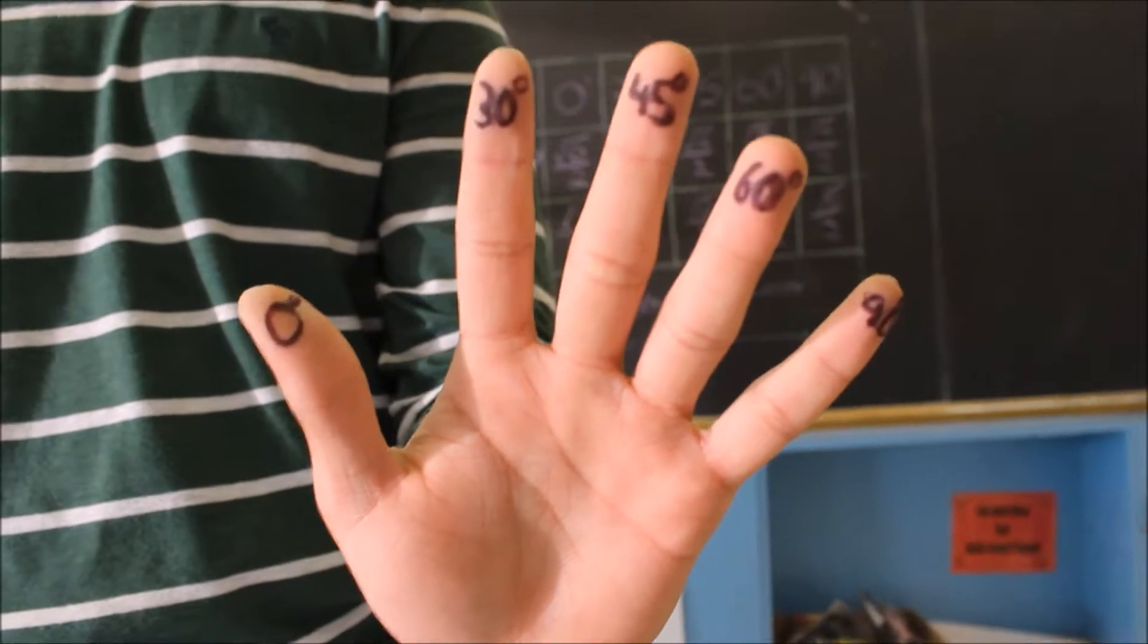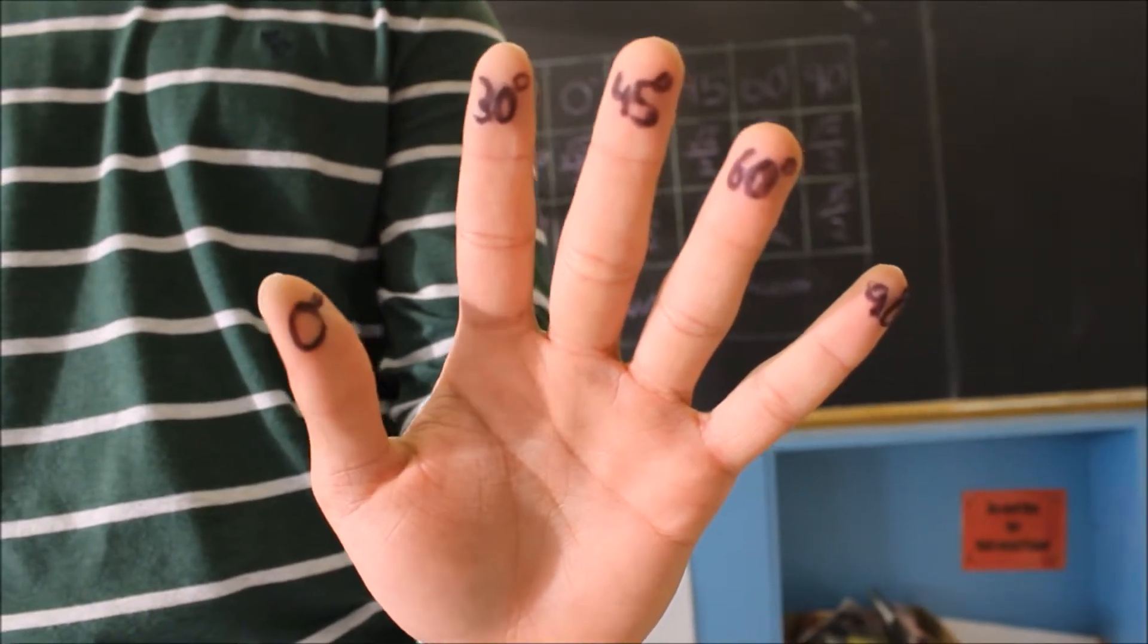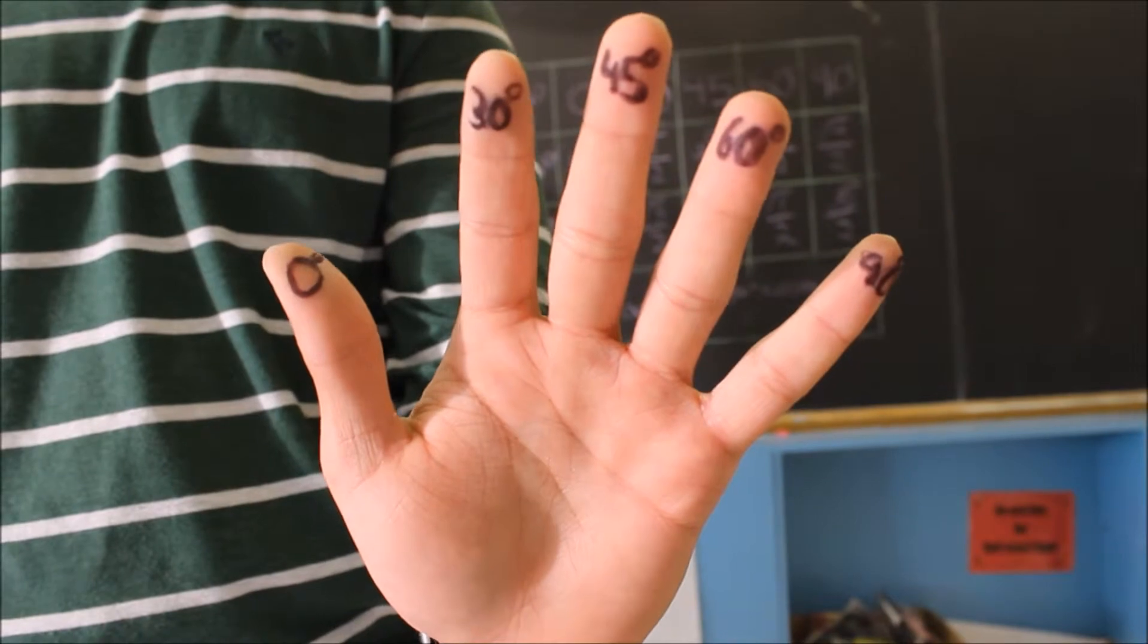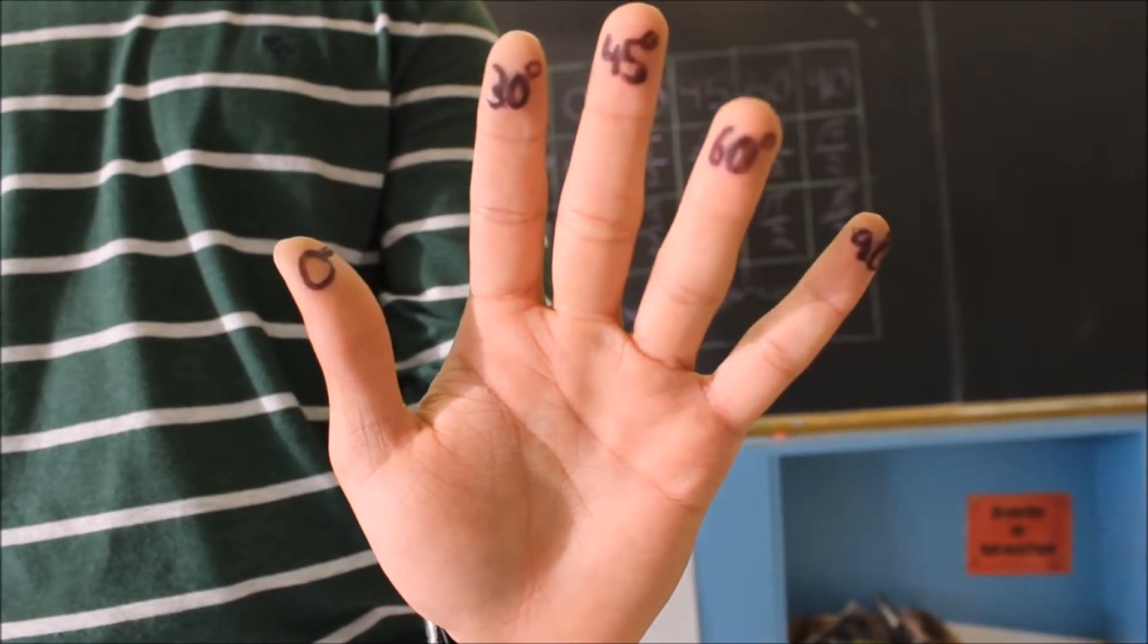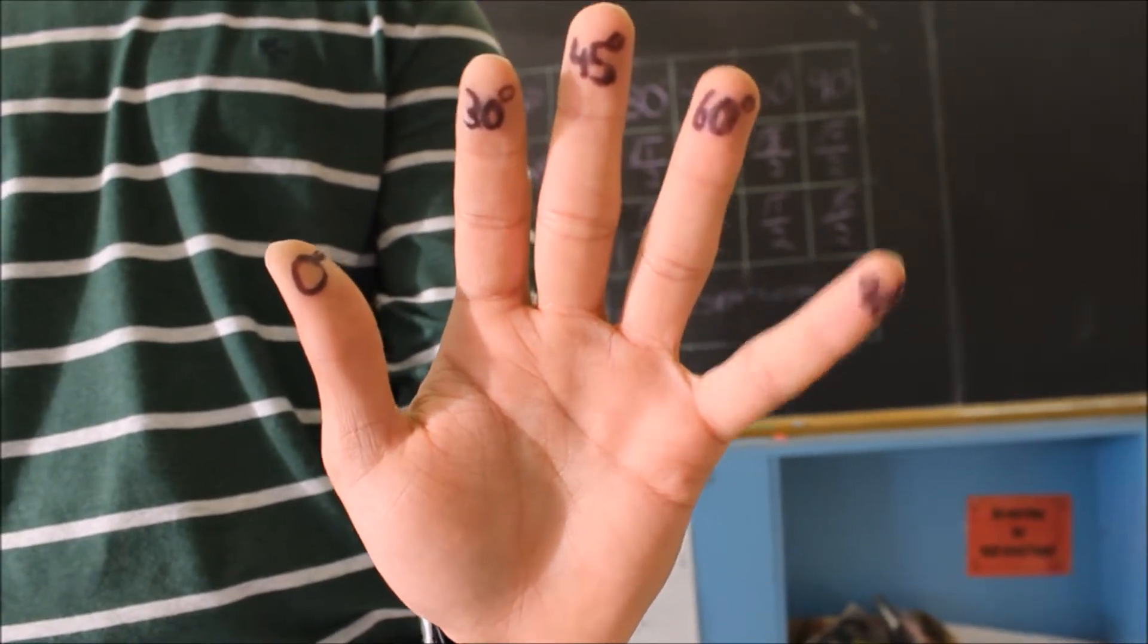Let's take a look at our left hands. Imagine your thumb as 0 degrees, your index finger as 30 degrees, your middle finger as 45 degrees, your ring finger as 60 degrees, and your pinky as 90 degrees.